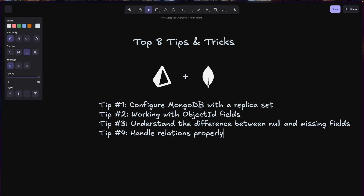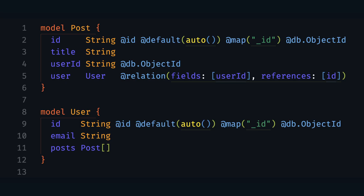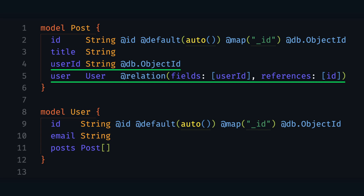Tip number four: handle relations properly. MongoDB handles relationships through document references and embedded documents, which differs from the foreign key approach in relational databases. When introspecting a MongoDB database, Prisma ORM may need help understanding these relationship patterns. After introspection, you'll need to manually add relation fields to your models. For example, if you have a post model with a user ID field, you'll need to add the relation to the user model like this. Remember that relation fields in MongoDB should always use the @db.ObjectId attribute when they reference another document's ID.